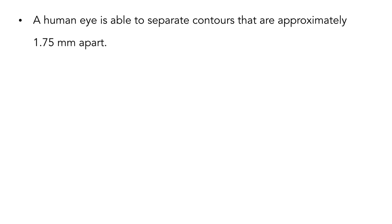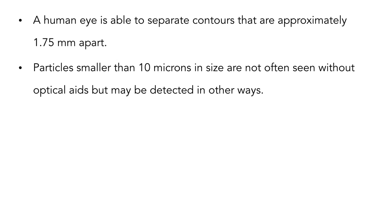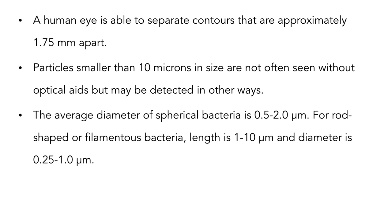A human eye is able to see two objects as separate objects if they are placed 1.75 mm apart. Any distance smaller than 1.75 mm, the human eye may consider the two objects to be a single object. A human cannot see objects smaller than 10 micrometers in size. The diameter of a spherical bacterium is in the range of 0.5 to 2 micrometers.